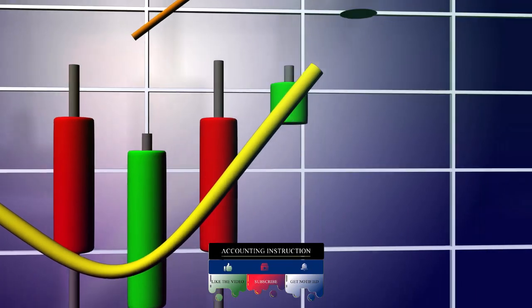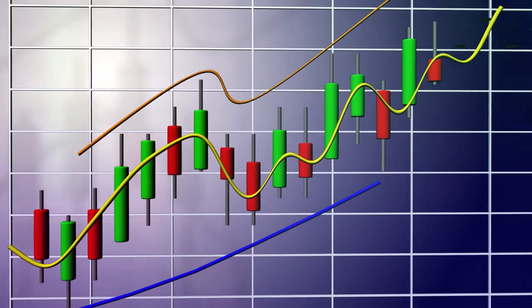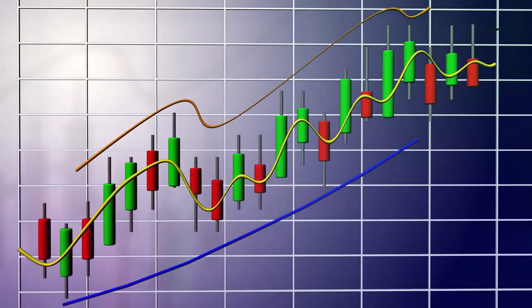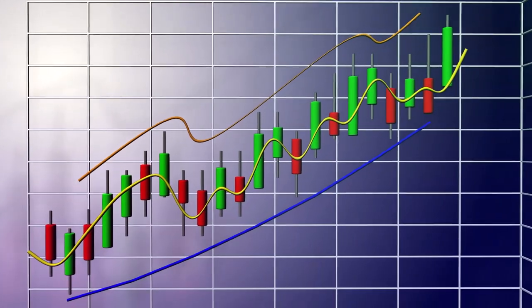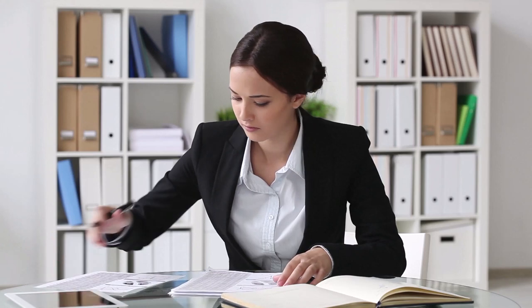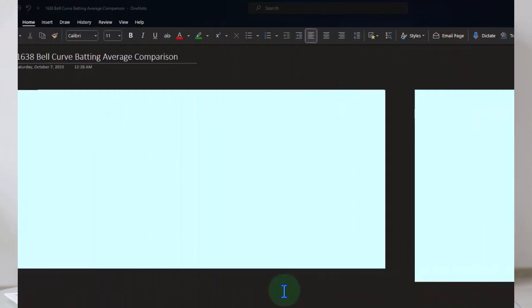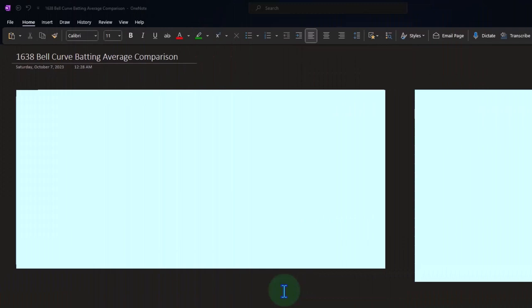We're now applying the bell curve to the batting average scenario. What's different here is we're talking about something similar to a job setting. Any type of job where you're measuring performance will require some type of statistical analysis. When looking at sports, we're basically judging the performance of players in their particular job — and you can apply the same concepts to other jobs as well.